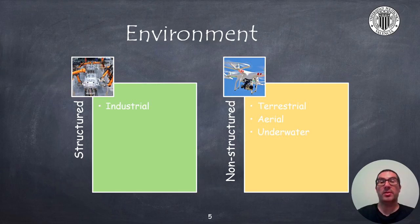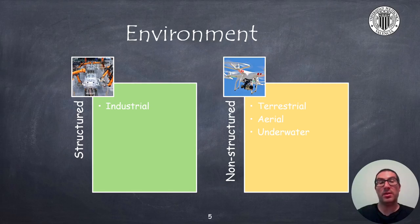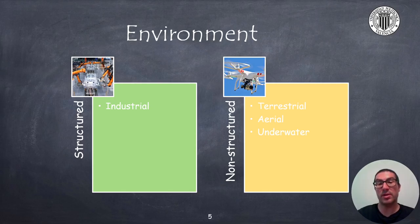Robots can work in multiple environments. We distinguish between structured environments, in which all the elements that the robot can interact with are previously known or we have some control over them, so the chances of colliding against an obstacle or an object are low. This is the case of industrial environments using a robotic arm, which are inevitably associated with the term structured environment. On the other hand, when the robot's environment is not fully known or it might change, we refer to this situation as an unstructured environment. Clearly, all types of robots that move in terrestrial or underwater environments can be considered under this consideration.